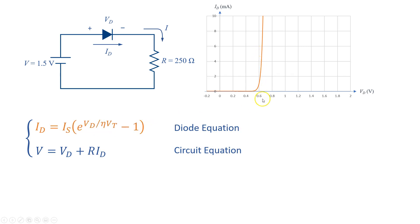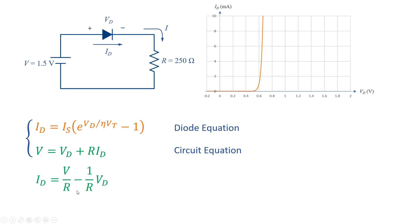Here I have already plotted the IV characteristics of the diode. For a reason that you will see shortly, I have extended the voltage axis. We just need to plot the second equation, the circuit equation. This is the equation of a line, which can be written in this form as well. The easiest way to draw a line is to find two points on the line and connect them.